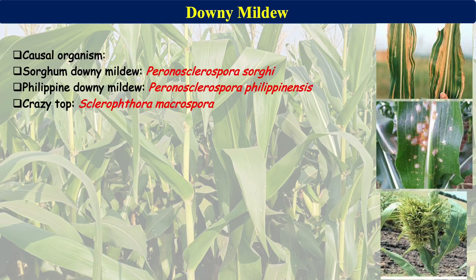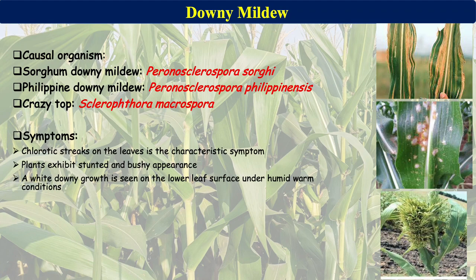Downy mildew of maize is caused by several pathogens. Peronosclerospora sorghi causes Sorghum Downy Mildew, Peronosclerospora philippinensis causes Philippine Downy Mildew, and Sclerophthora macrospora causes Crazy Top disease. These three diseases collectively occur in maize and are known as downy mildew. The most characteristic symptom is chlorotic streaks on the leaves.